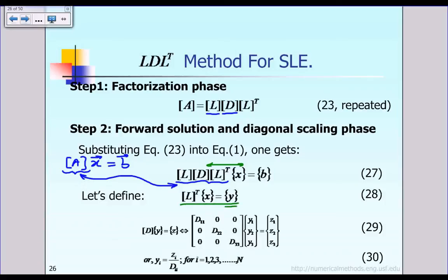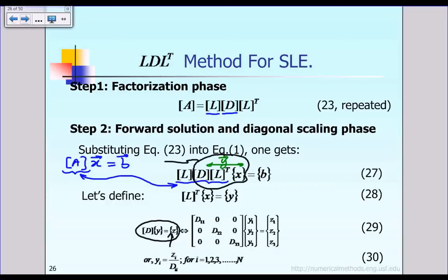Next, the product of diagonal matrix D times vector Y is given a new name: vector Z. So DY equals Z. Substituting back into equation 27, we get a lower triangular matrix L multiplied by the vector Z equal to the vector B. This restructures the problem into a simpler form.